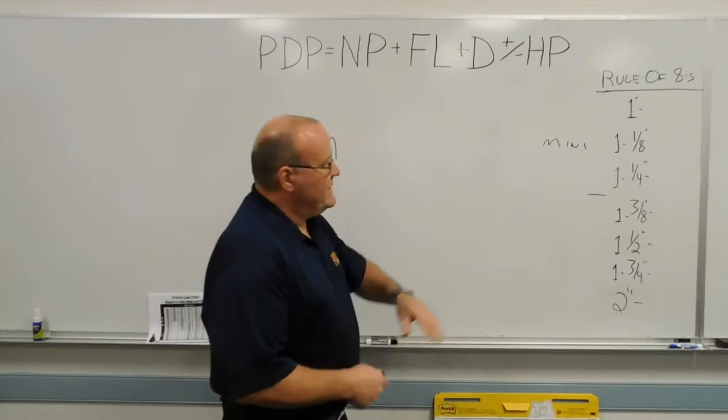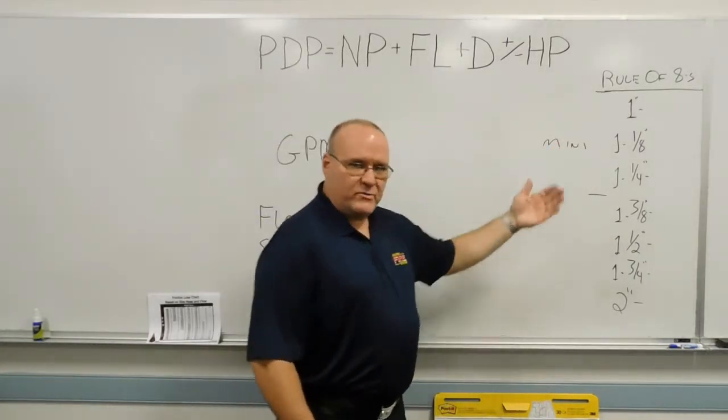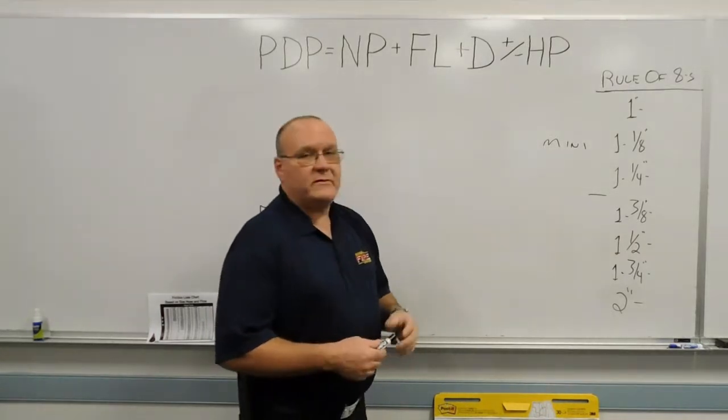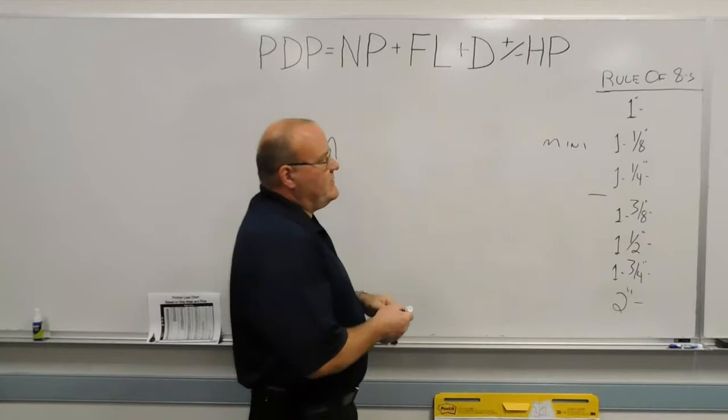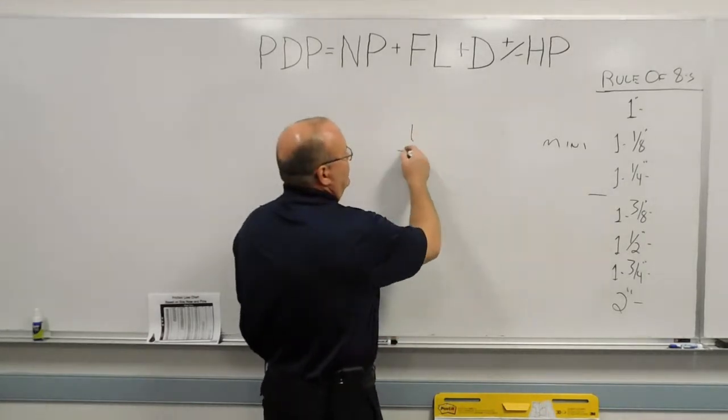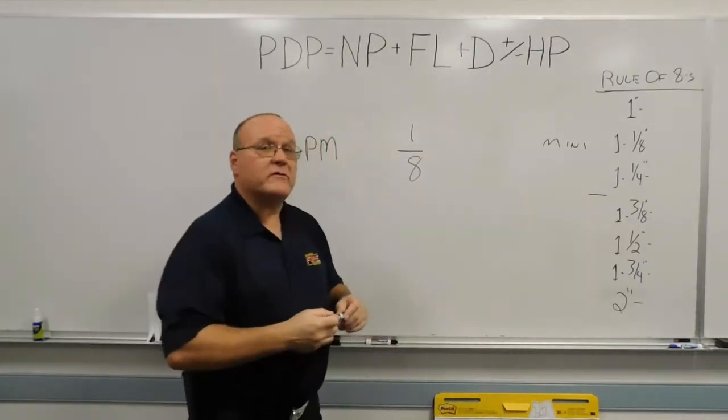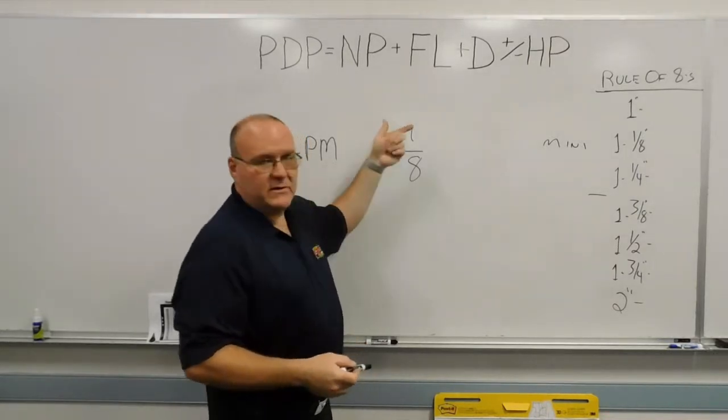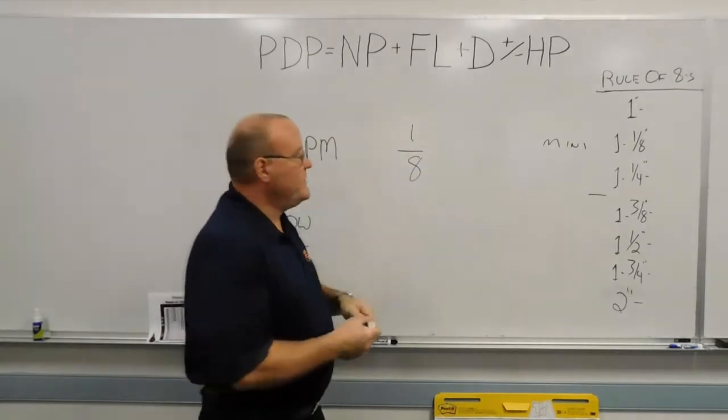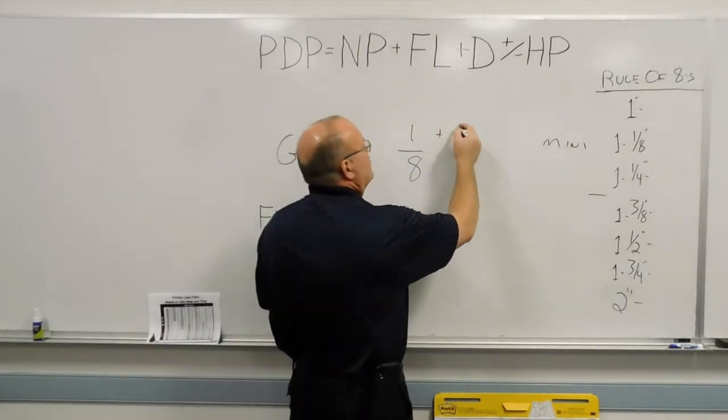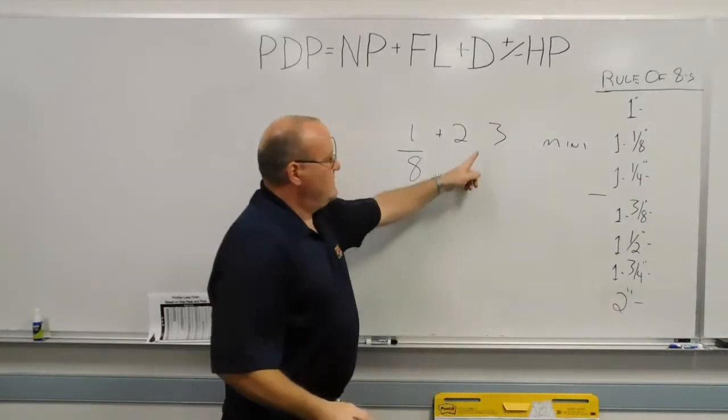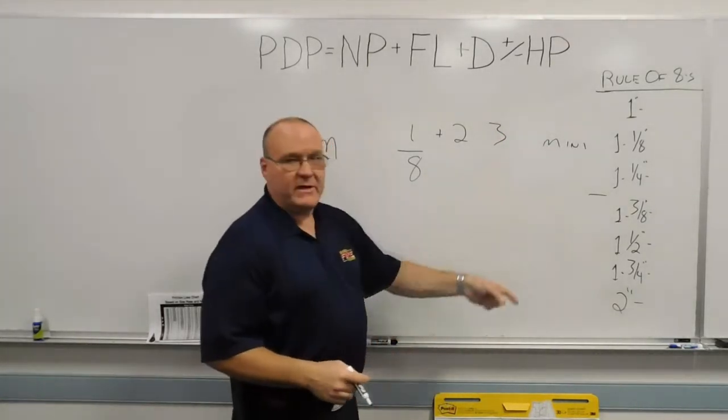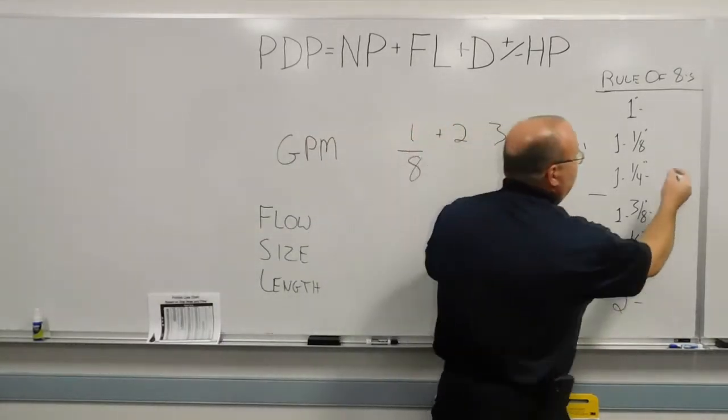So we'll use inch and one-eighth as an example. Inch and one-eighth tip, the fraction part of that is one over eight. I don't have to convert that to an eight. It's already there, eights in the fraction. And we add two to the top number. So one plus two will give me three. And that would tell me that that inch and one-eighth tip at 80 pounds, its rated nozzle pressure on the master stream, should give me 300 gallons a minute.